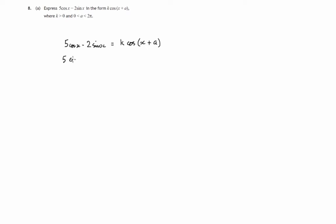I think the first step would be to expand the right-hand side of this identity using the addition formula. So cosine of x plus a will have a cos cos sin sin pattern and the addition will change to a subtraction. So we'll have cos x cos a minus sin x sin a. Now the whole of that expression is getting multiplied by k, so each of these terms will be multiplied by k.